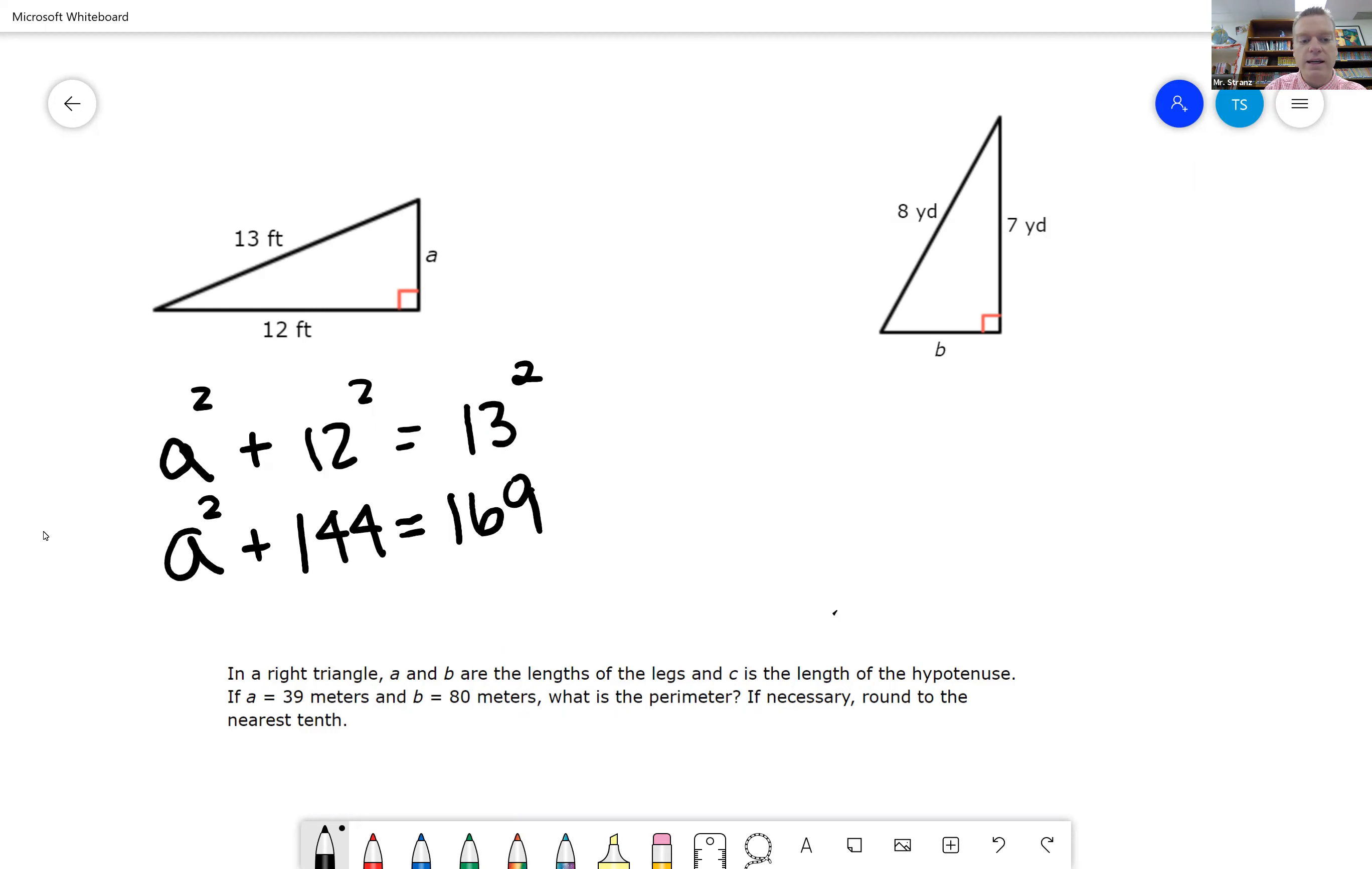To figure out what A is, we're going to have to do a little bit of algebra. I'm going to subtract 144 from this side, subtract 144 from this side, and I have 25 left. So I know A squared equals 25.